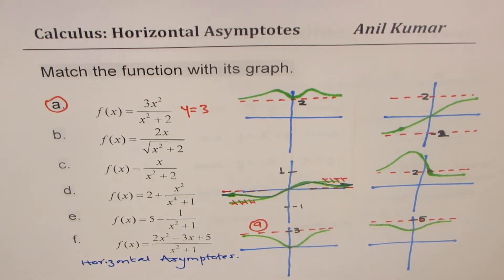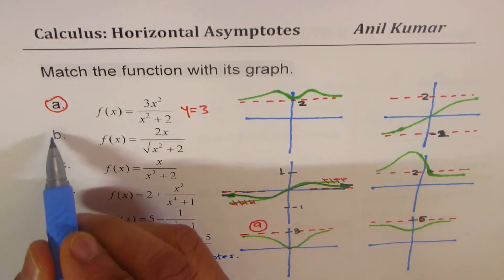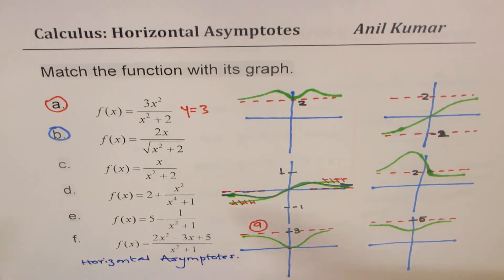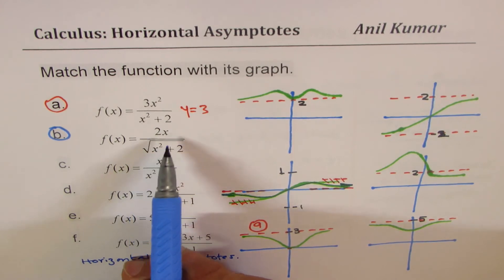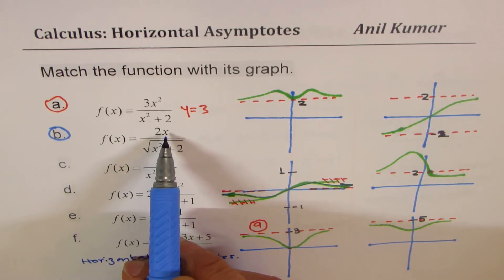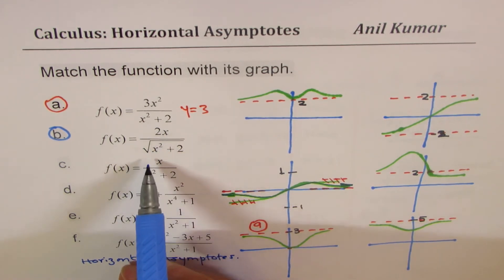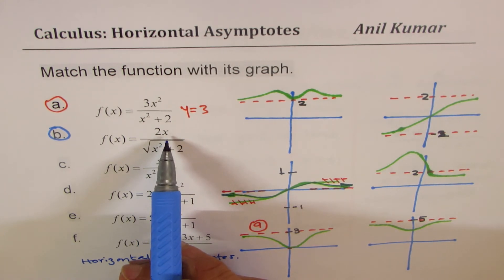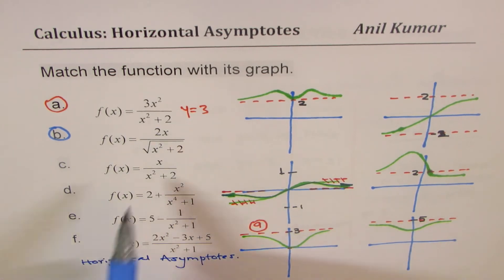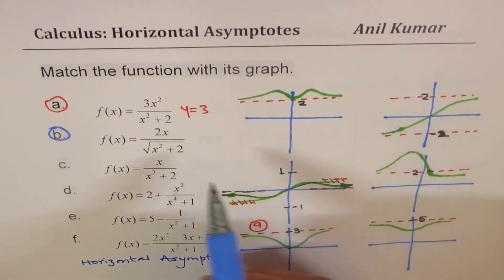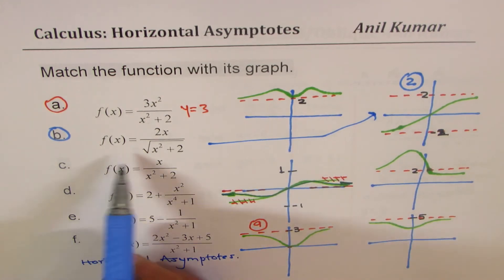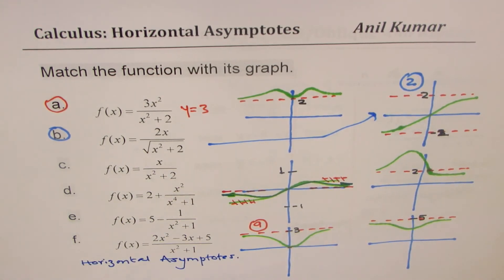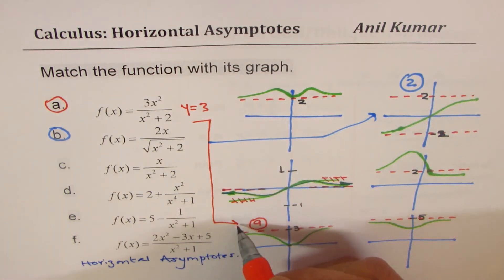Now let's look at the next one, which has a square root function in the denominator — equation b. As discussed, the square root is always positive, but the numerator could be positive or negative. The degrees are the same, so we have horizontal asymptotes at y equals plus and minus 2 — two asymptotes. The only figure that matches with this is the graph showing both asymptotes, so that becomes equation b's match.